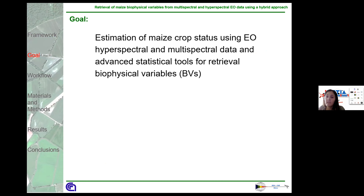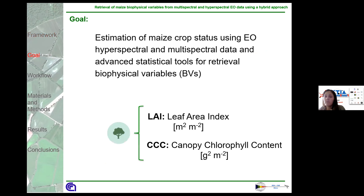The vegetation traits investigated were the Leaf Area Index (LAI) and the Canopy Chlorophyll Content. LAI is the green leaf area per unit ground surface area, while the Canopy Chlorophyll Content specifies the content of chlorophyll in the canopy.